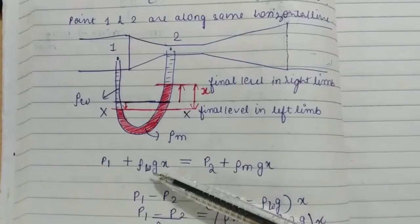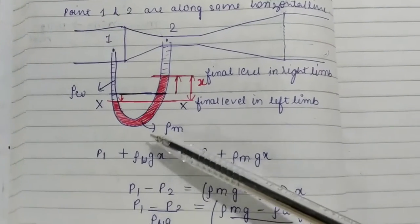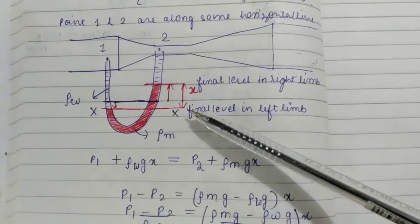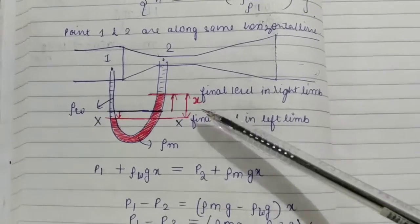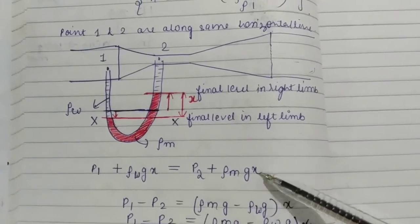P1 plus rho Wgx because in the left limb we have water and in the right one we have mercury. So, P2 plus rho Mgx.